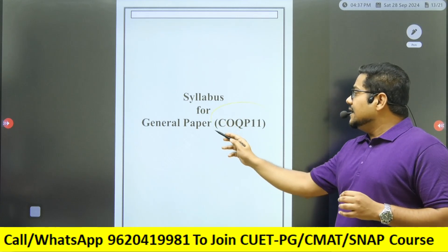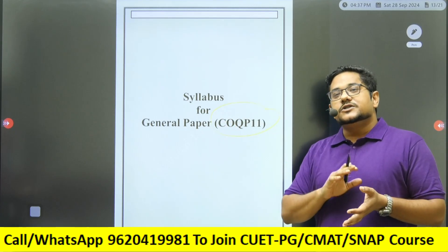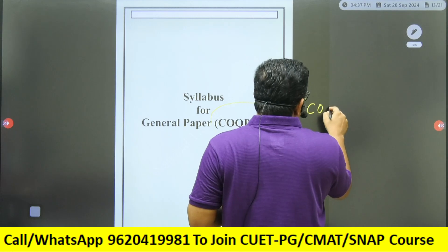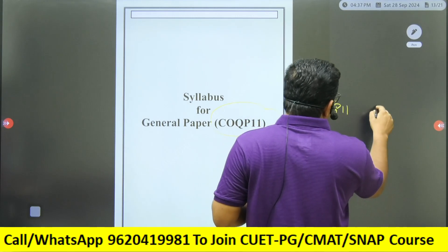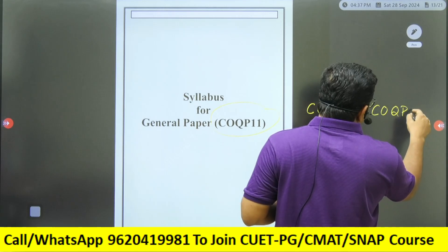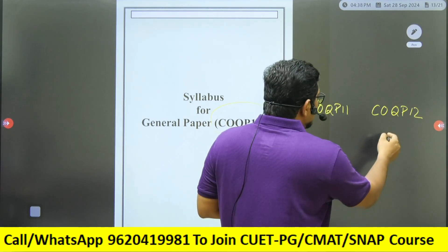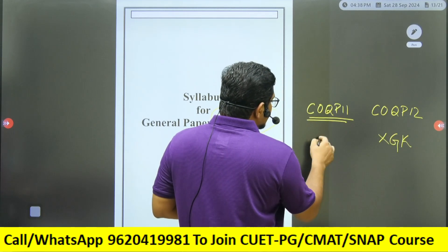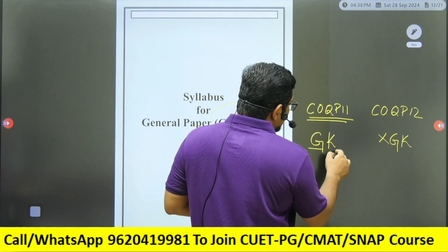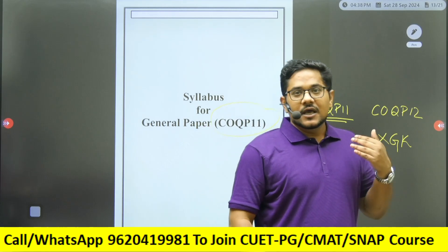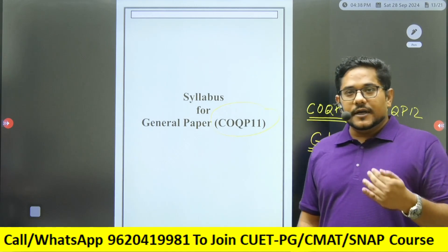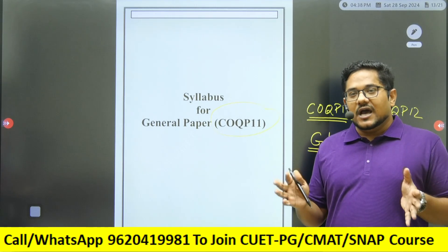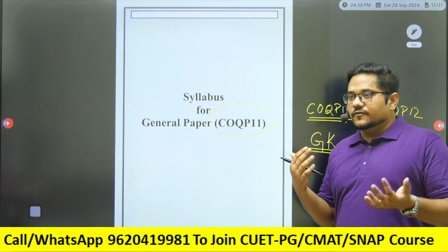Now let's talk about COQP 11. This is quite similar to COQP 12. Both are aptitude papers with almost the same syllabus. The only difference is that COQP 12 has no GK section, while COQP 11 includes a GK section. Otherwise, Maths, Logical Reasoning, and English Comprehension — the syllabus is the same and the difficulty level is also the same.